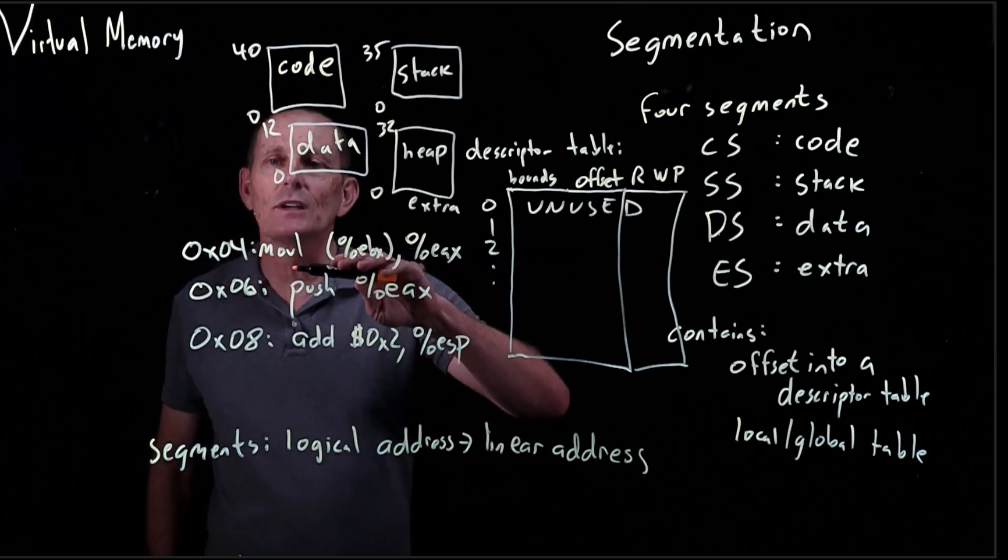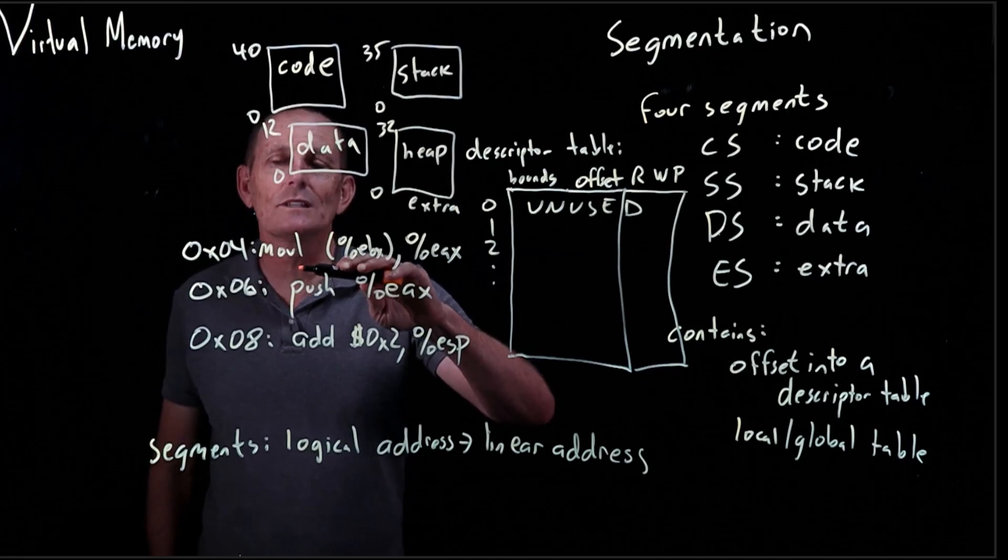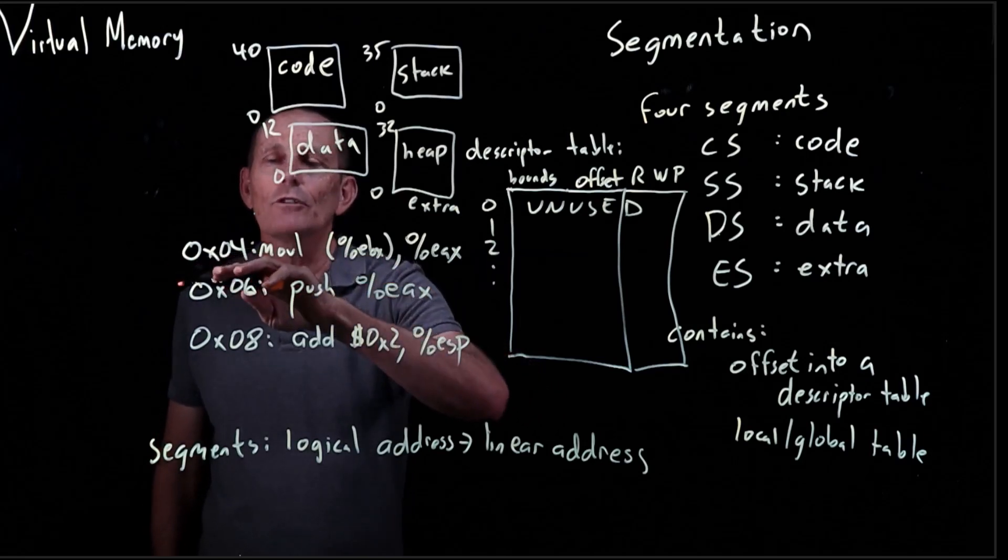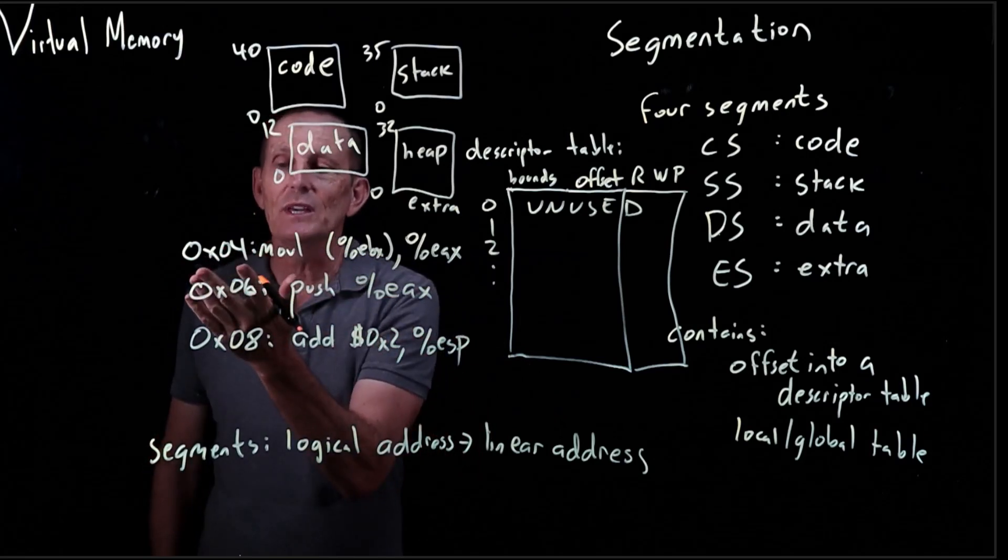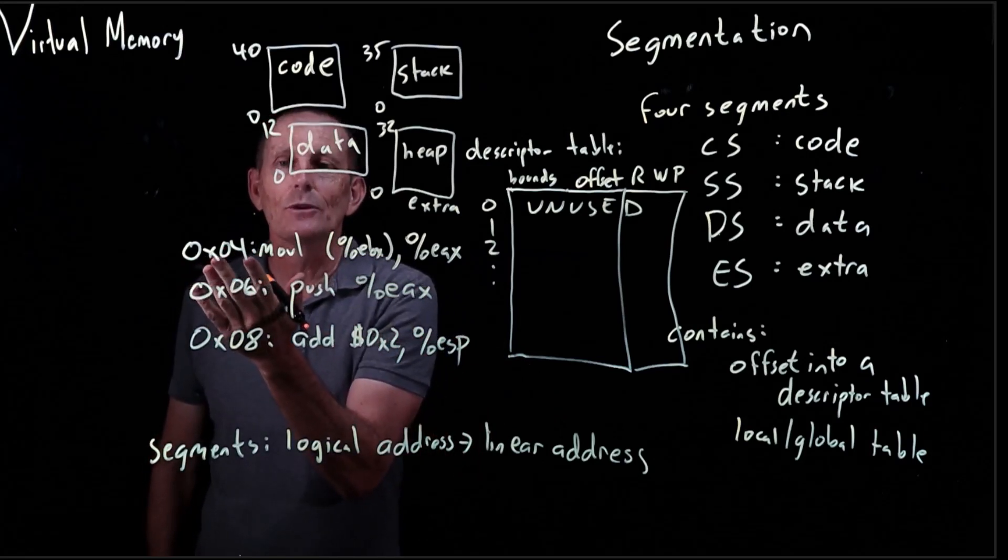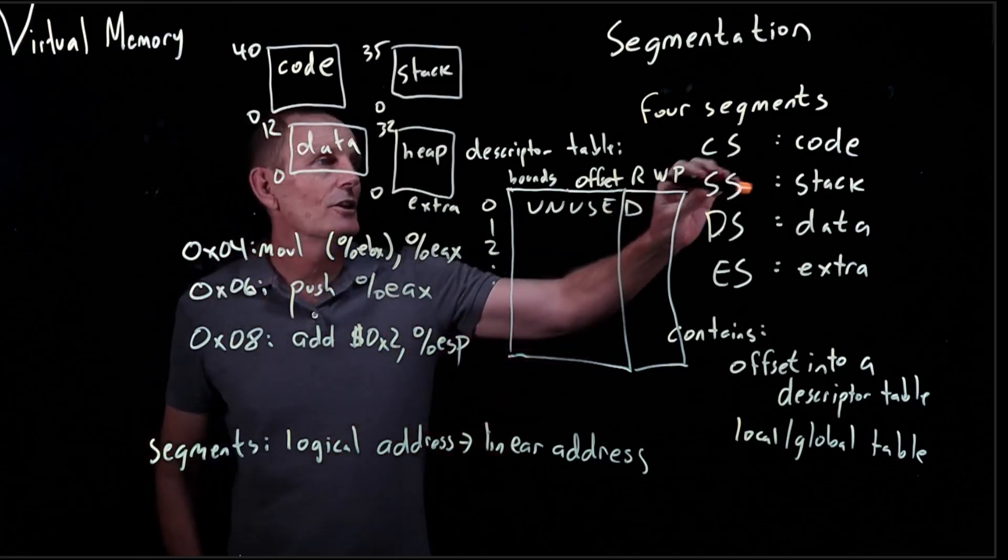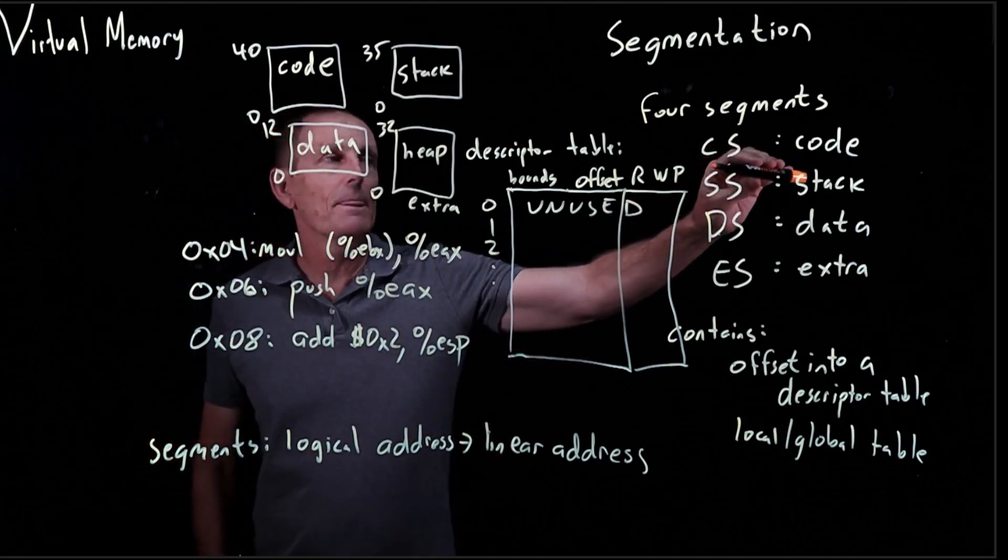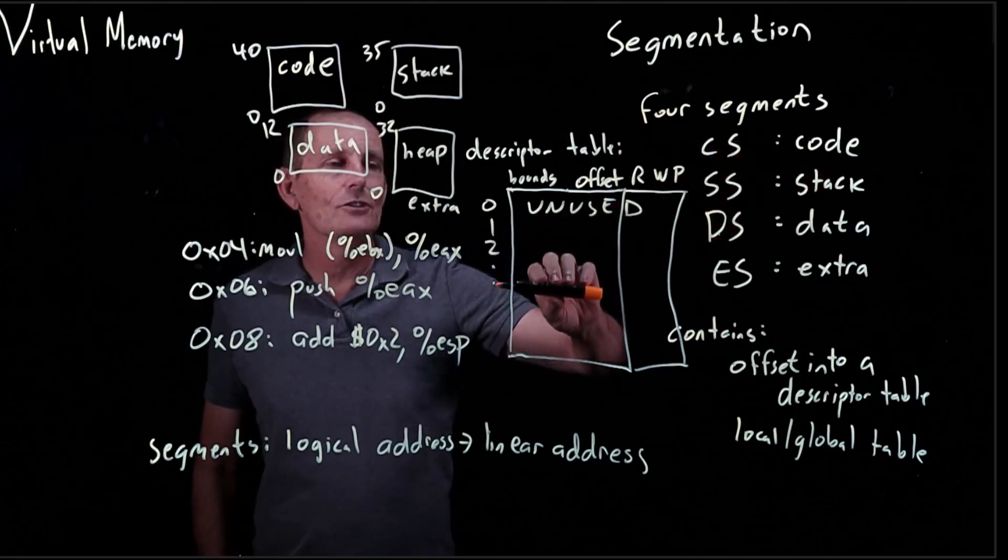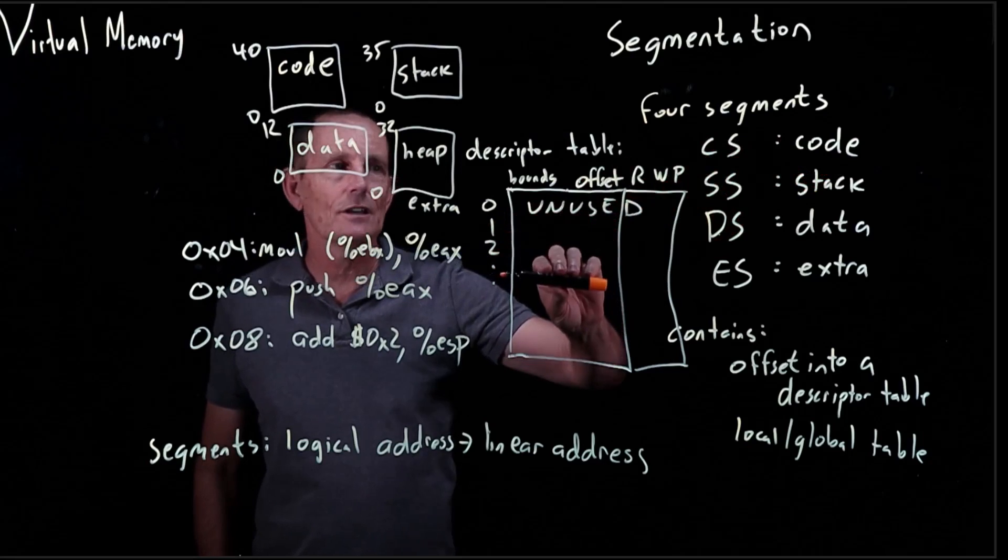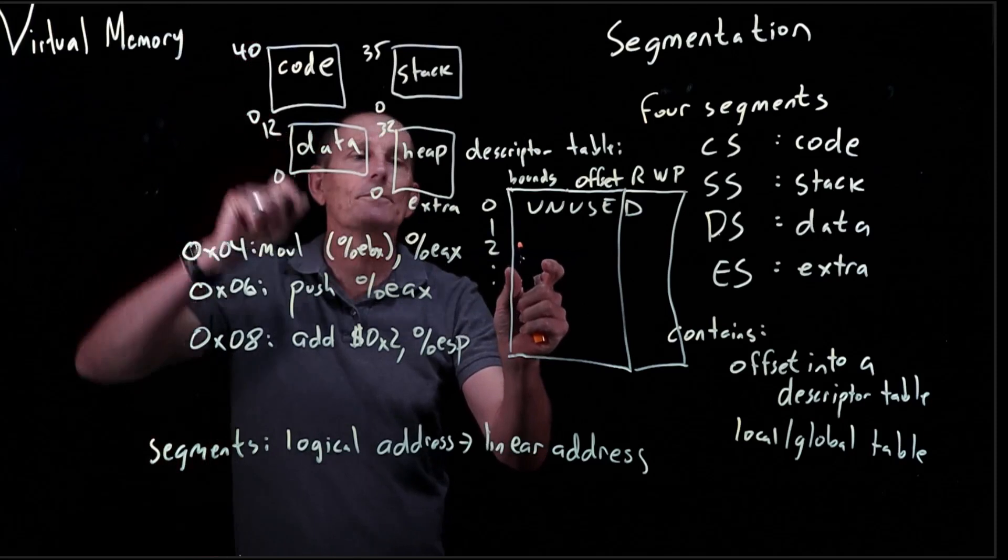Actually, I skipped a step here, and that is that first we had to fetch this instruction before we could execute it. We looked at 0x04. When we are using the EIP at 0x04, in order to find out what linear address to use, we're going to use the code segment register. That's going to tell us what descriptor to use because we'll get an offset that will tell us what bounds to use for bounds checking to make sure we're not beyond 40.